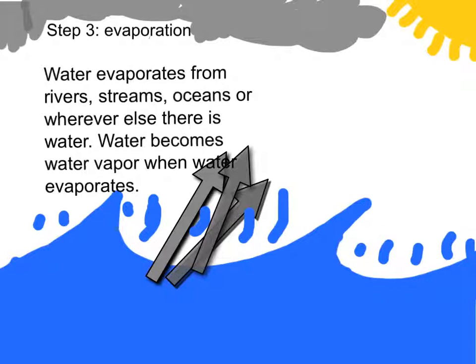Step 3: Evaporation. Water evaporates from rivers, streams, oceans, or wherever else there is water. Water becomes water vapor when water evaporates.